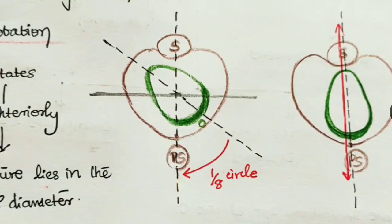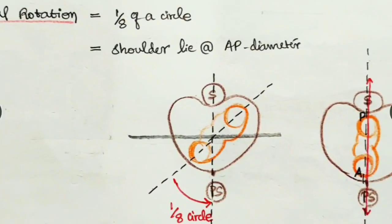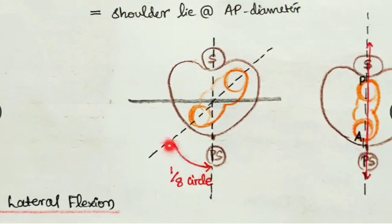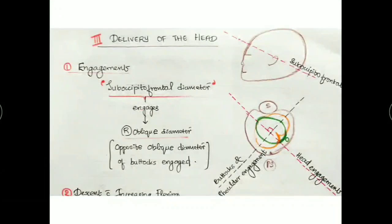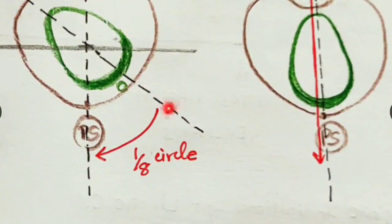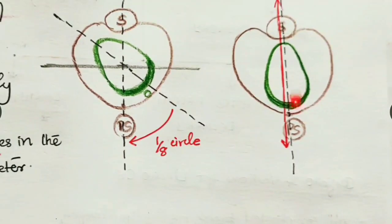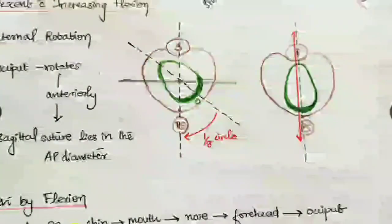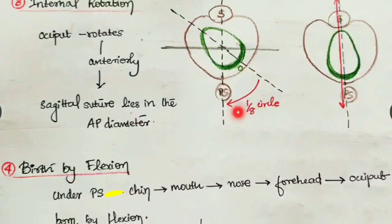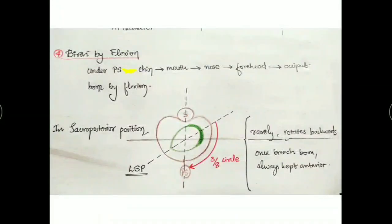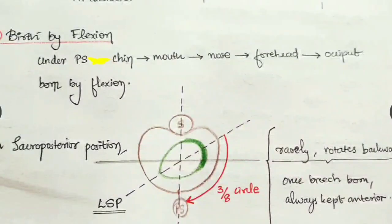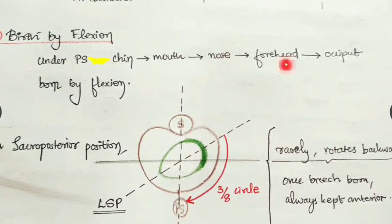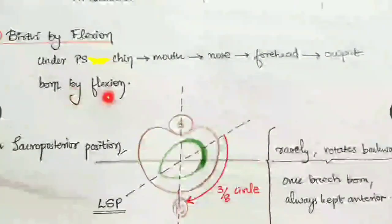The head rotates one-eighth of the circle in the opposite direction - here the shoulders and buttocks rotated in one direction, whereas the head rotates one-eighth of the circle in the opposite direction, and aligns in the AP diameter so the sagittal suture lies in the AP diameter. Next is birth by flexion: keeping constant frontal pressure with the head in flexion under the pubic symphysis, the chin is delivered first, then the mouth, nose, forehead, and occiput - everything born by flexion.